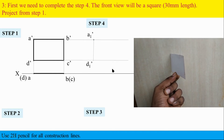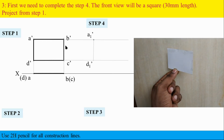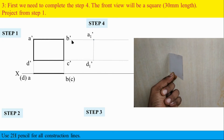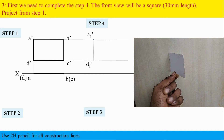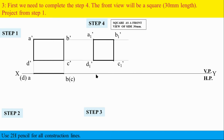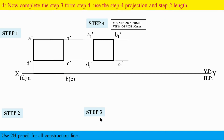What is the meaning of A dash D1 dash distance? This horizontal projection is the key concept. Find B1 dash vertical line, and C1 dash. Mark A1 dash and D1 dash.